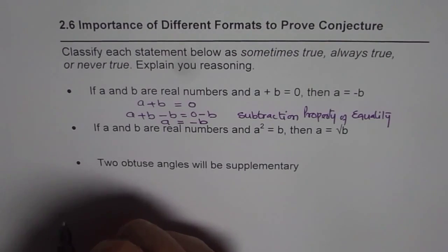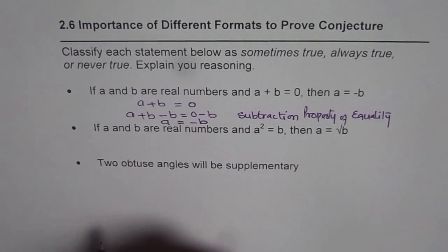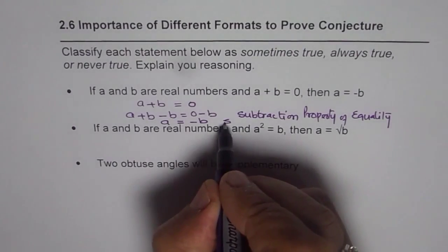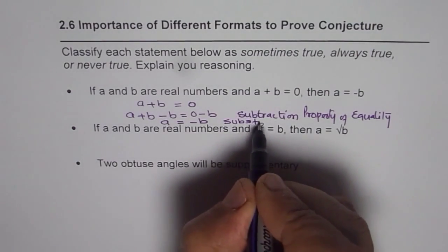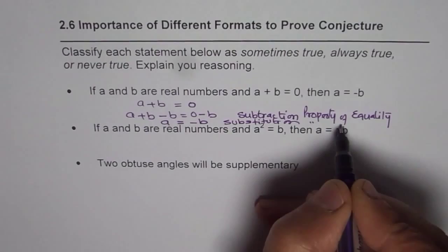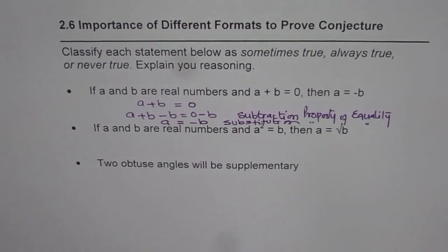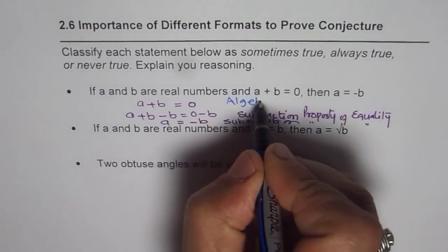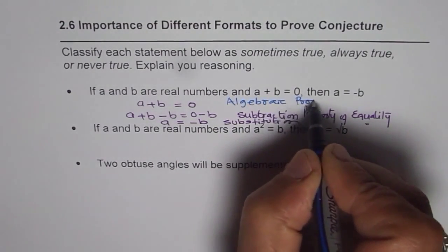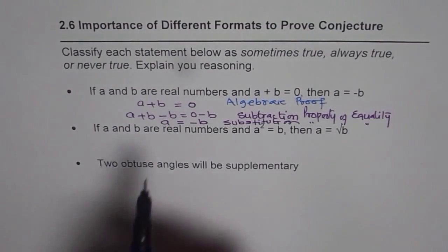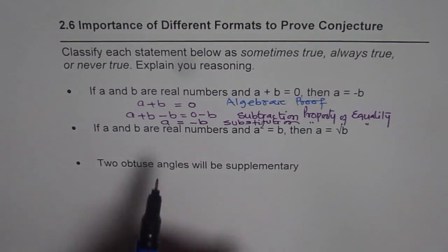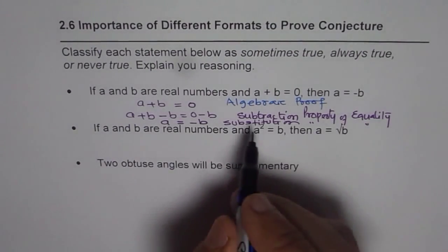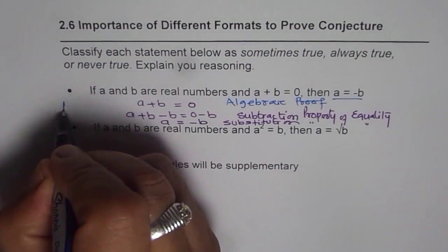This final step is the substitution property of equality. So we can write a reason for each statement. The method used here is algebraic proof, and the result is that A equals minus B. So this statement is always true, since we proved it.